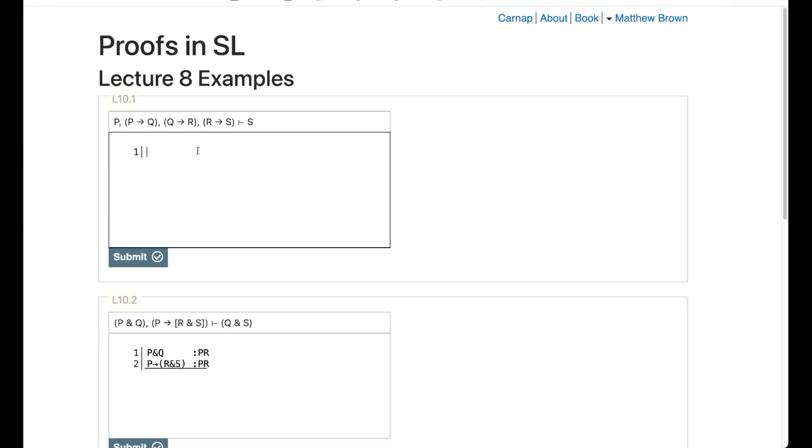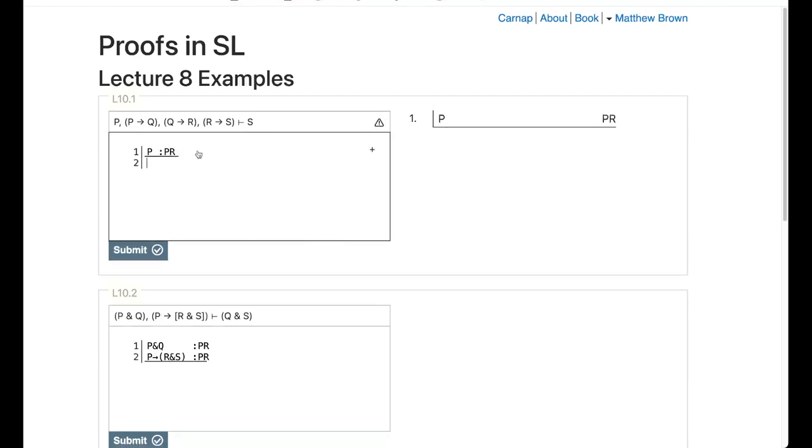First thing I need to do is I need to put in my premises. So I've got four premises here. P is one of my premises. What else do we have? We have if P then Q is a premise. If Q then R is a premise. And then if R then S is a premise. And I'm trying to prove that S. Okay, let's see.